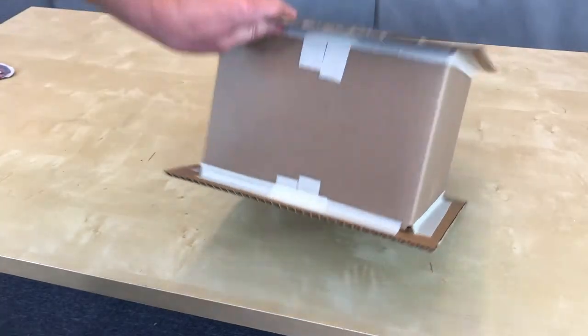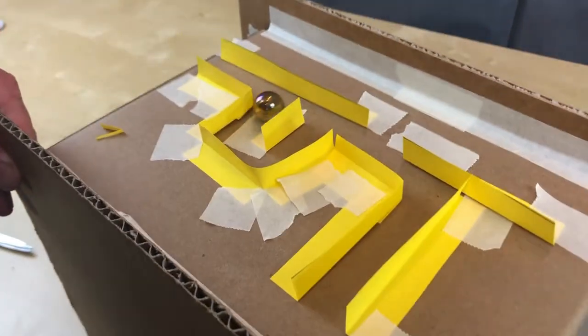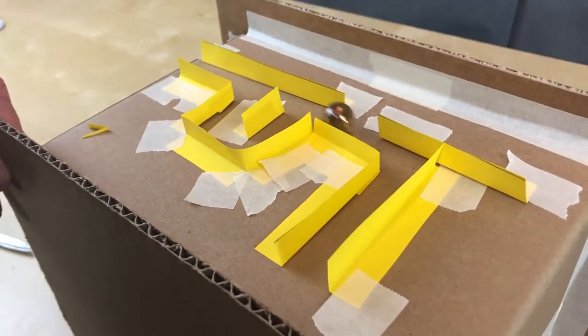With the edges attached to the box, we're ready to start creating paths for our marble. To create our pathways, all we need is some paper, tape, and some simple folding techniques.